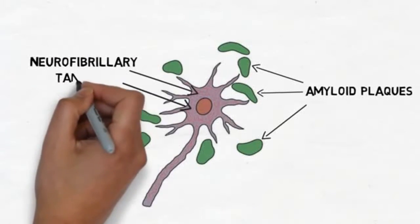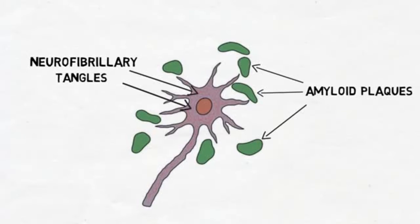Although amyloid plaques and neurofibrillary tangles are hallmark signs of Alzheimer's disease, it is unclear if they contribute to the neurodegeneration or are part of the brain's response to it.